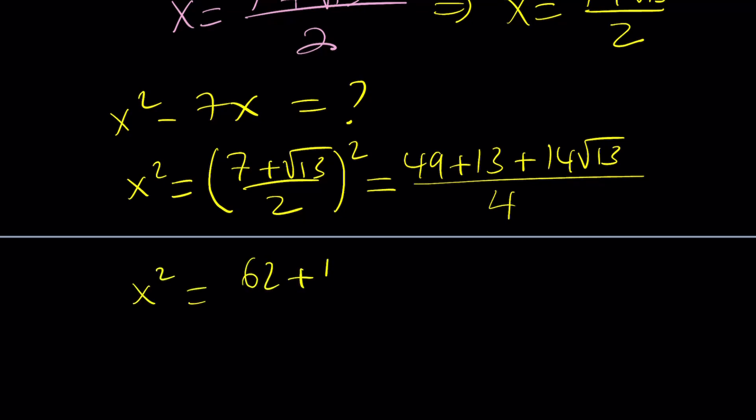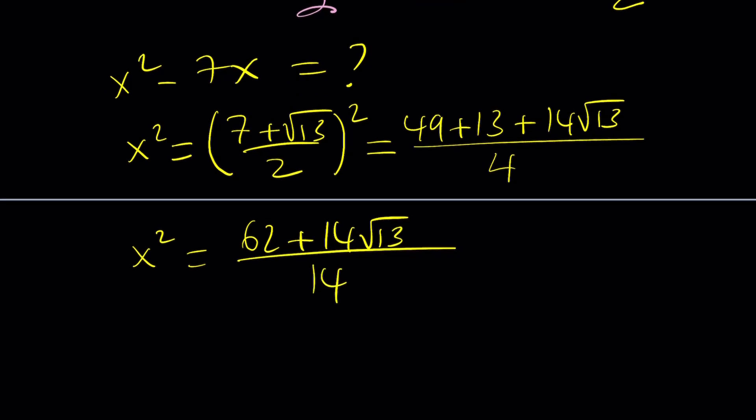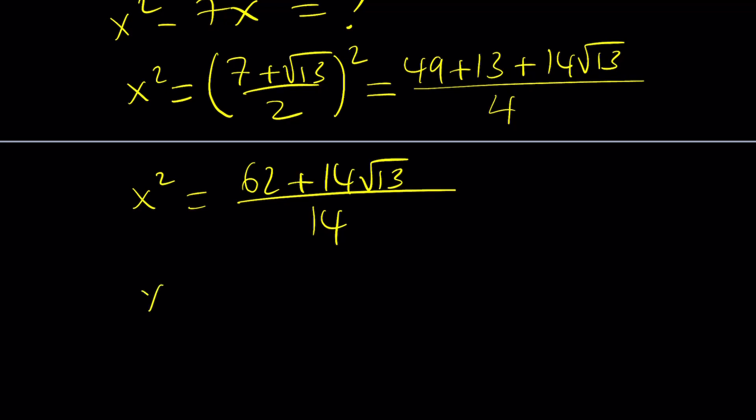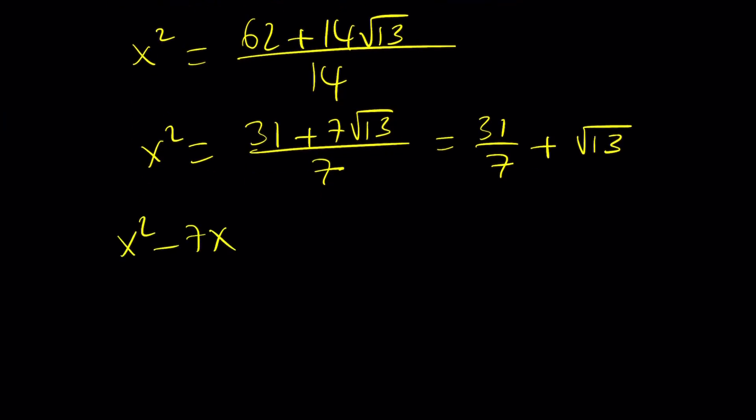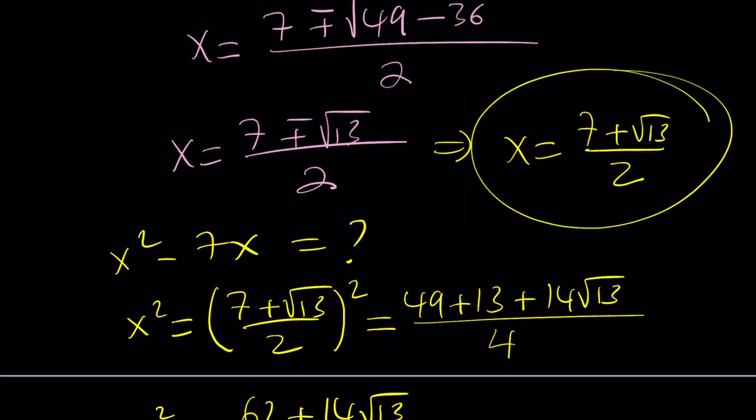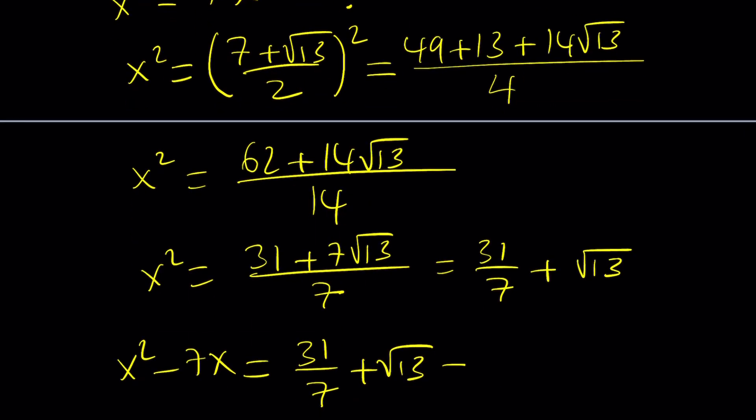It's going to give us 62 plus 14 root 13 divided by 14. We can simplify this. Let's divide the top and the bottom by 2. That's going to give you 31 plus 7 root 13 over 7. You can write this differently too, like 31 over 7 plus root 13. This might be helpful because we're going to be plugging it into this expression, which is x² minus 7x. What is x though? x is 7 plus root 13 over 2. But this is supposed to be multiplied by 7.